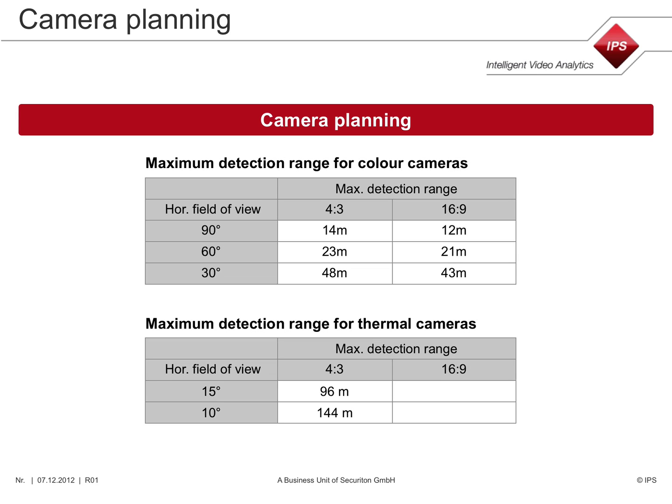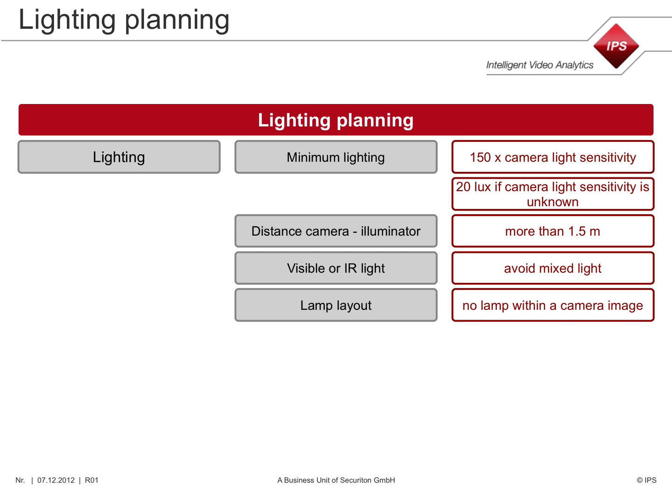These tables show some examples of the maximum detection range. For a 30-degree field of view, for instance, the range is 48 meters. The minimum lighting should be 150 times the camera light sensitivity. If the camera light sensitivity is unknown, you may use 20 lux as a rule of thumb that is suitable for most cameras.